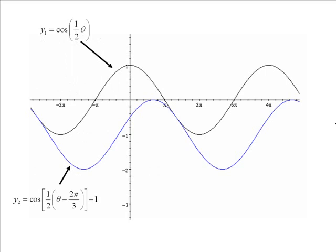So when we look at these graphs together, the graph in black is the original one with just the 4 pi period, and then otherwise a normal looking curve. And the graph in blue is our translated one. So I have moved it 2 pi over 3 to the right, and then also one unit down. So you can see it is out of phase horizontally. It is also dropped down.